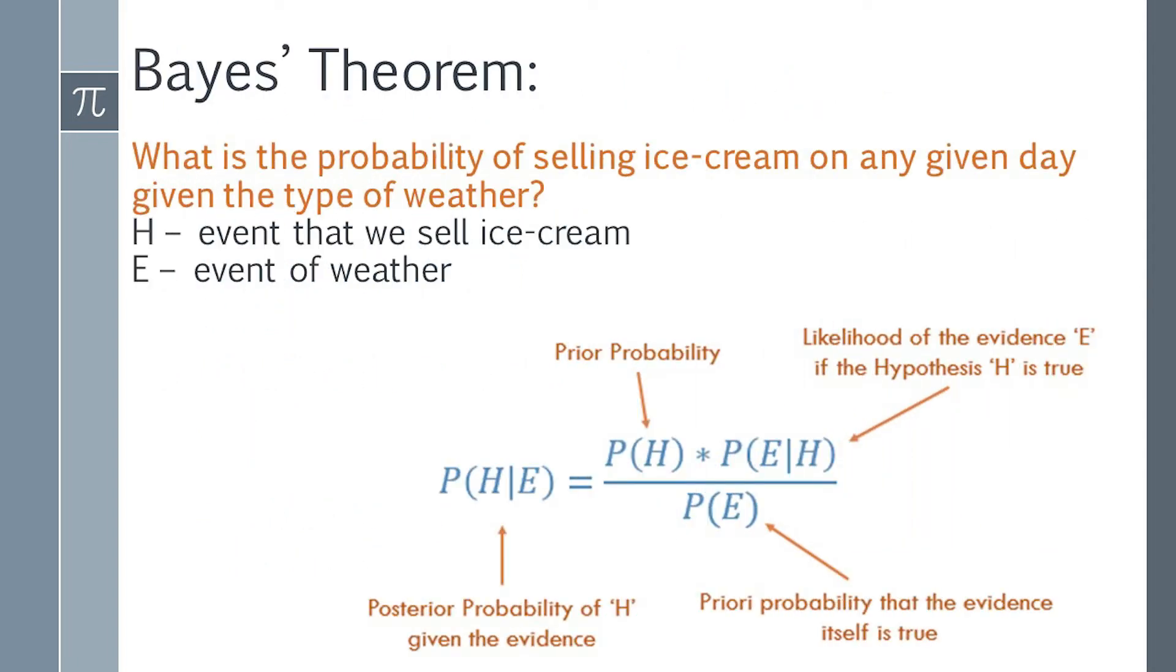Another example of why we should understand multivariable calculus can be understood by knowing Bayes' Theorem. Bayes' Theorem is a relationship between the conditional probabilities of two events. For example, if we want to find the probability of selling ice cream on a hot and sunny day, Bayes' Theorem gives us the tools to use prior knowledge about the likelihood of selling ice cream on any other type of day.